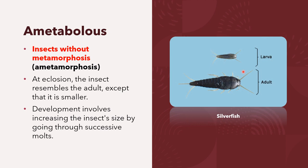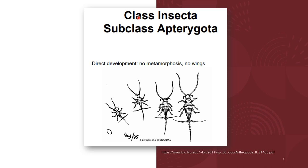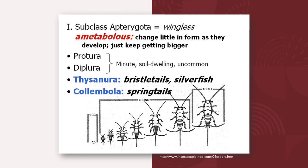The silverfish is a species of small, primitive, wingless insect under the suborder Apterygota. The larva of the silverfish resembles the adult. Insects under the subclass Apterygota exhibit ametabolous metamorphosis: there is direct development, no metamorphosis, and no wings. They are considered the most primitive type of all insects. The term Apterygota comes from the Greek 'a' meaning without, and 'pterygo' meaning wing.